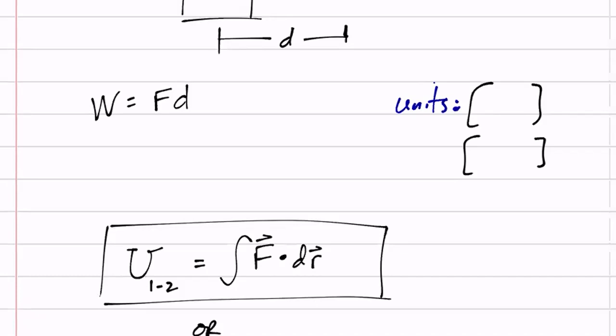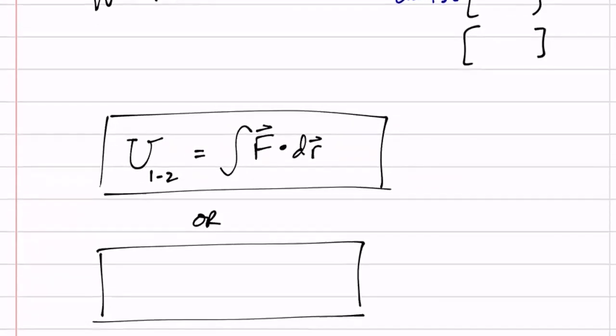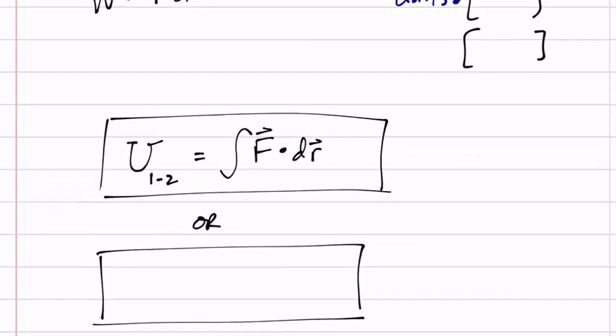That's the total work done — the work done by the X force in the X direction, and so on. When you dot product two vectors, you only get a scalar, not a vector. So this is just a scalar — this is the magnitude.